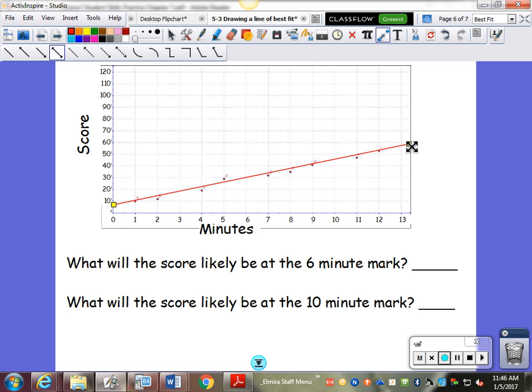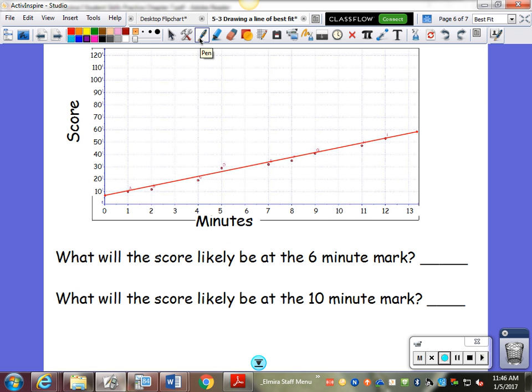And we're going to draw that line in. Now, again, the purpose of this line is to make predictions. So this is about how many minutes into something is and what the score is. So what will the score likely be at the six-minute mark? So I would follow the six line up and follow the six line across. Looks to be about 30. What will the score likely be at the ten-minute mark? Follow the ten line up. Follow it across. Looks to be about 46.